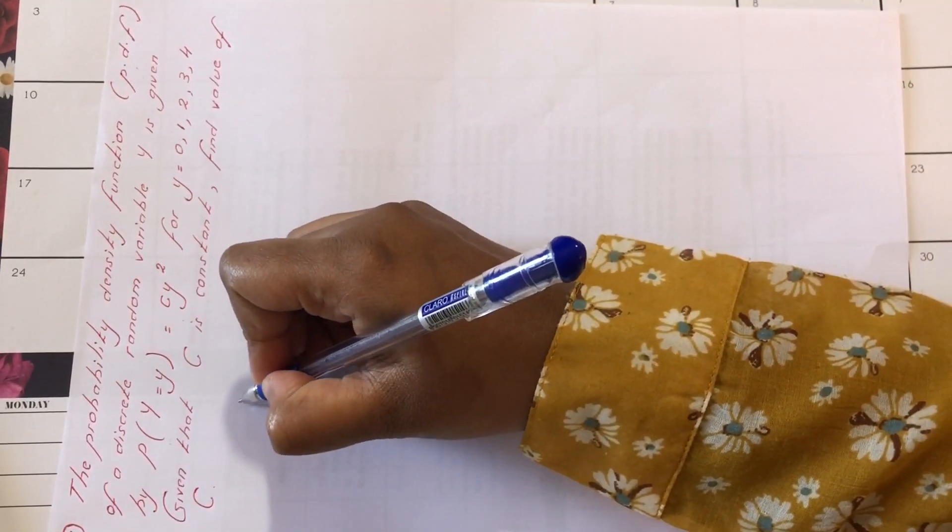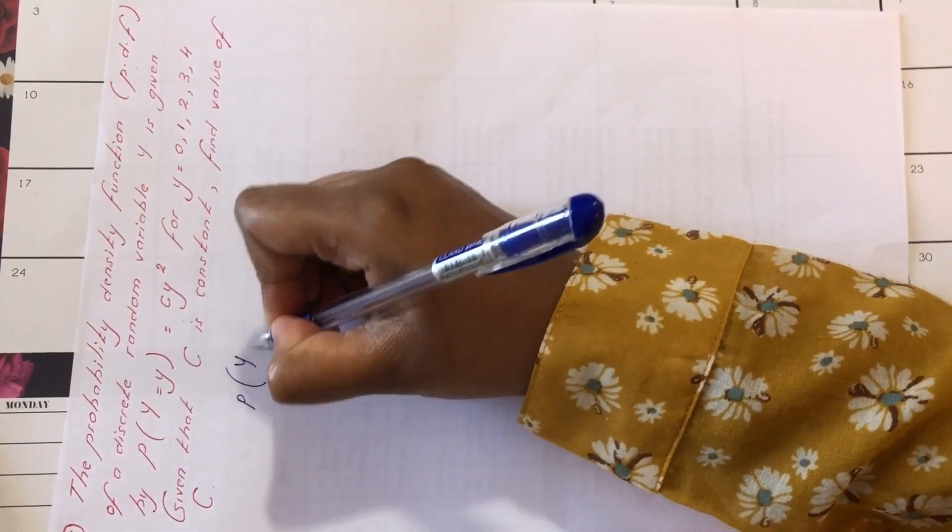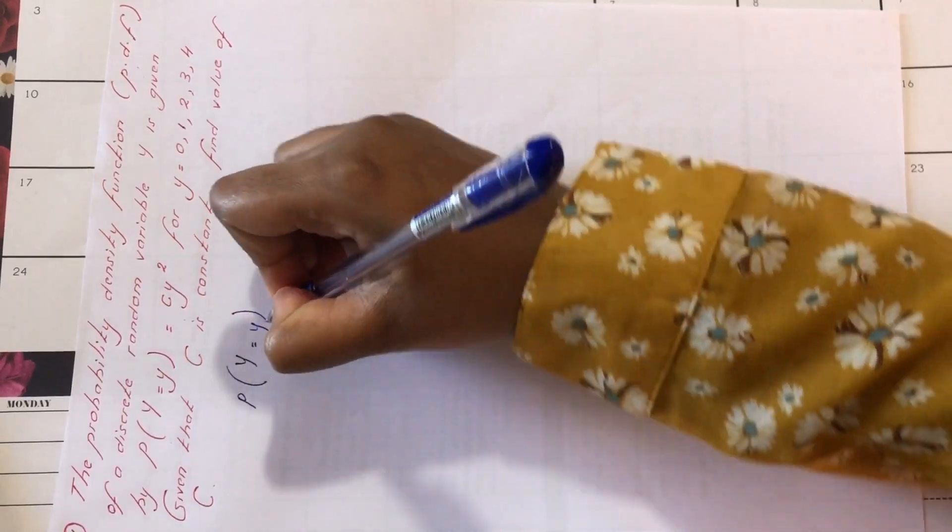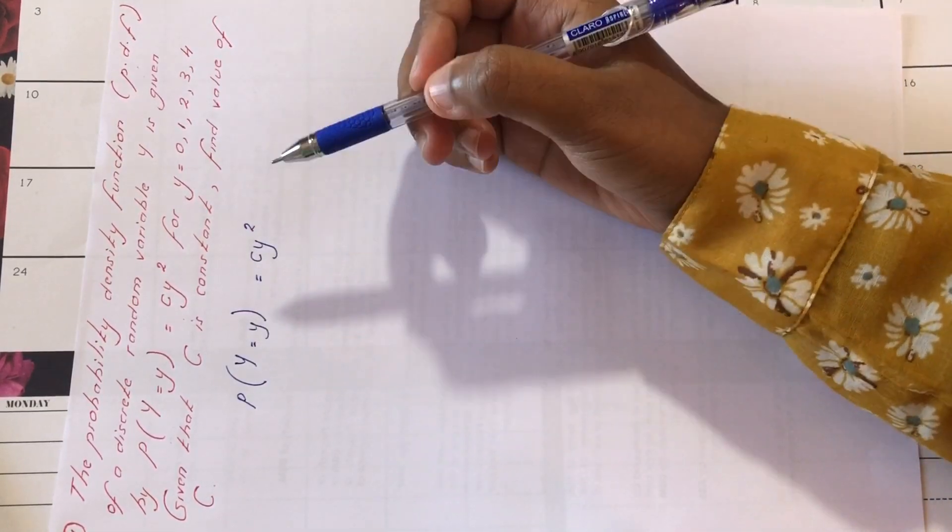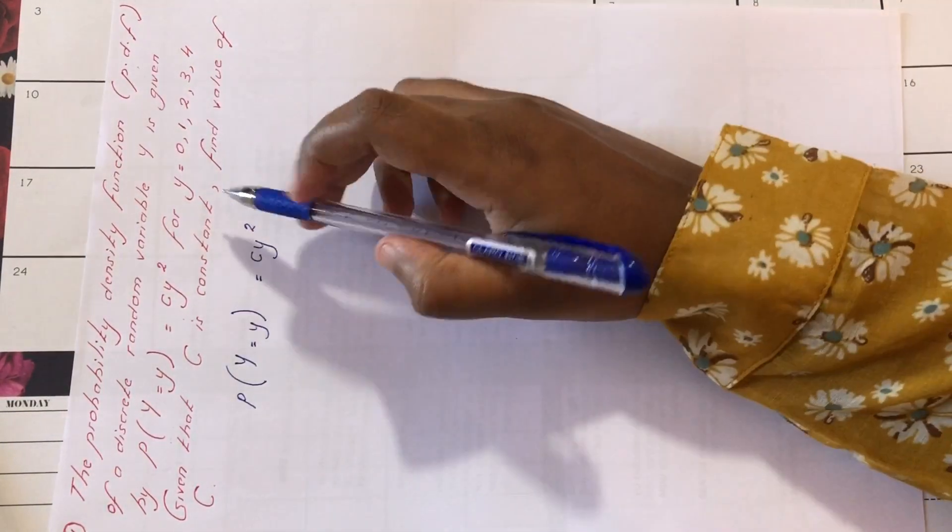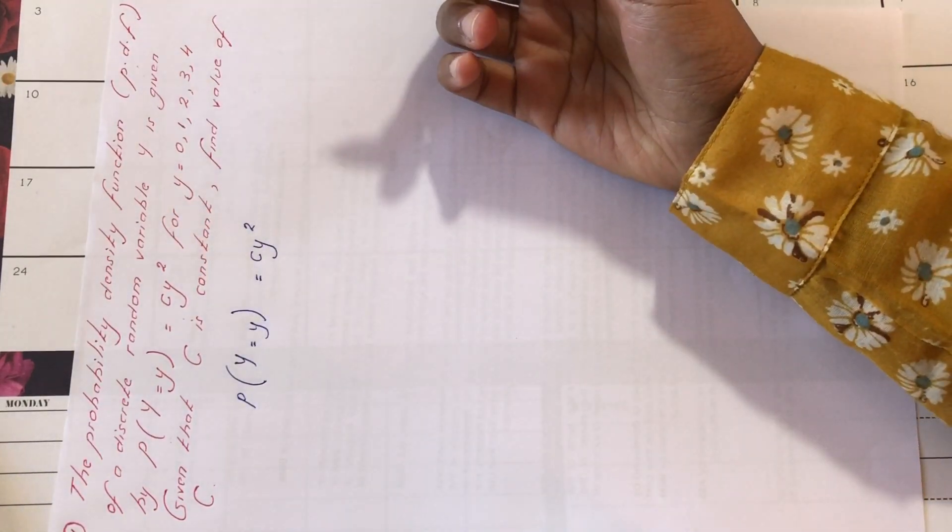So here we have the pdf probability of y equals y, cy square. So it is the function that is responsible for allocating probabilities, is known as the pdf.